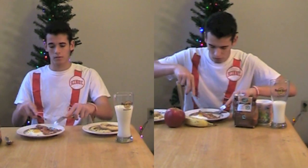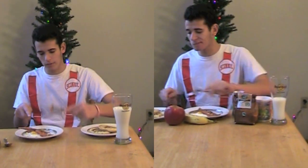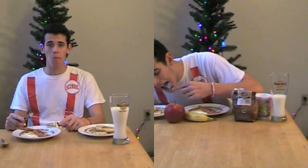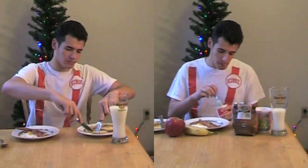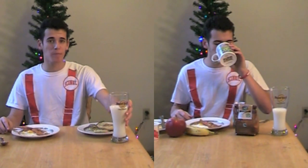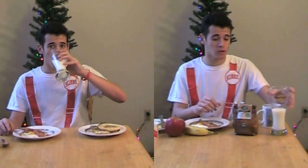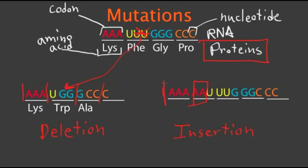An insertion, on the other hand, is an entirely different story. This is when extra nucleotides are inserted in the genetic code between two other bases. Here, Max has waffles, eggs, bacon, yogurt, fruit, coffee, and milk. That's a lot of breakfast, and he just ate it all. The reason this can have such a major effect is because it alters the reading frame of the DNA, meaning all the other bases are pushed over. This can change more than one codon triplet and, as a result, more than one amino acid.